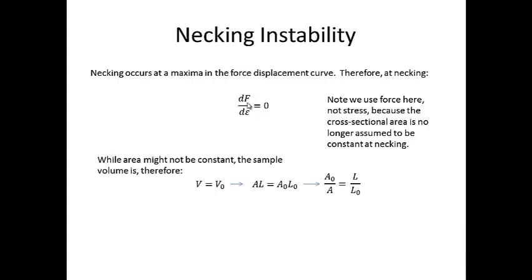We also assume that volume is conserved in the sample. The cross-sectional area is not constant, but the volume is constant. So that means we can then say that the area times the length at any given time is equal to the initial area times the initial length, or the volume is equal to the original volume. We then can convert that equation into a ratio of A0 over A, which equals L over L0. So just keep that equation in the back of your mind, and we'll see how we'll use it again later.